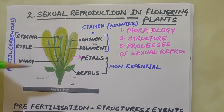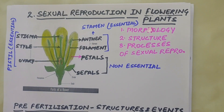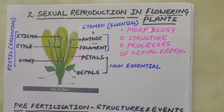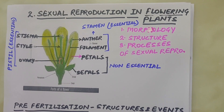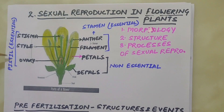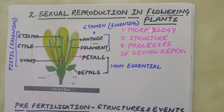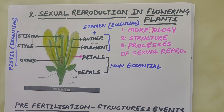These are petals and sepals, which are called non-essential parts of the flower. It does not mean that they are not essential, but they are not directly involved in reproduction. The essential parts are pistil and stamen. Pistil consists of stigma, style and ovary, and stamen consists of anther and filament. They are called essential parts because they are directly involved in reproduction.